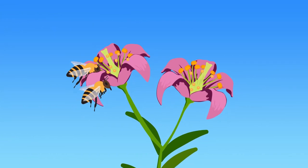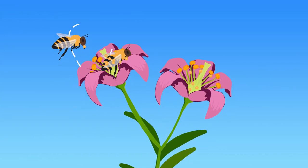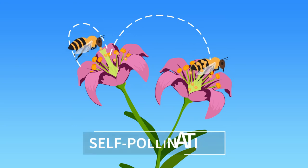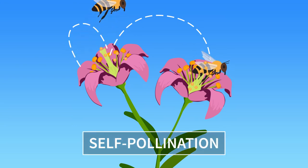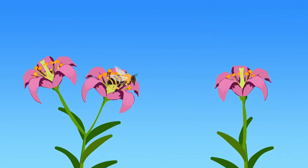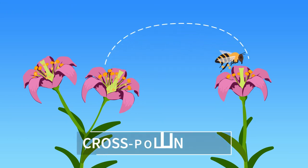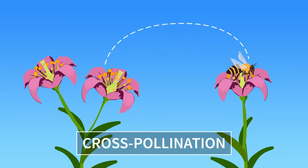When pollination occurs within the same flower or the same plant, it is called self-pollination. But when it occurs between different plants of the same species, it is called cross-pollination.